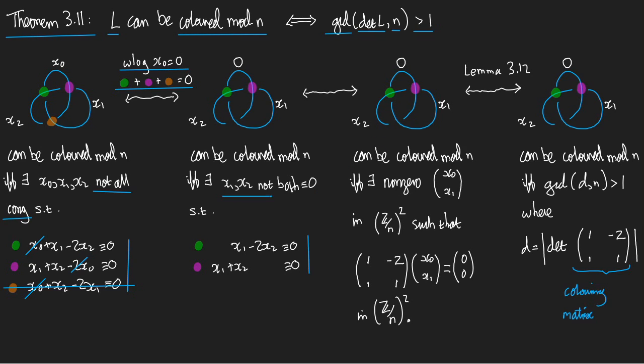The trefoil can be coloured mod n if and only if, well, we used to say there are x1 and x2 not both zero. And now we say if and only if there's a non-zero vector x1 x2 in z mod n squared.